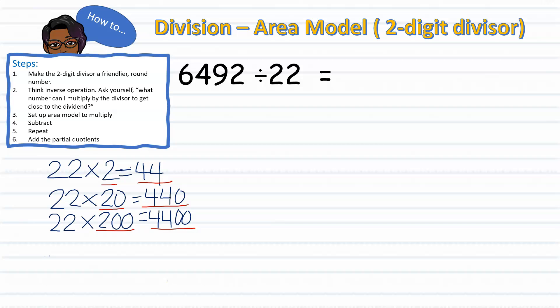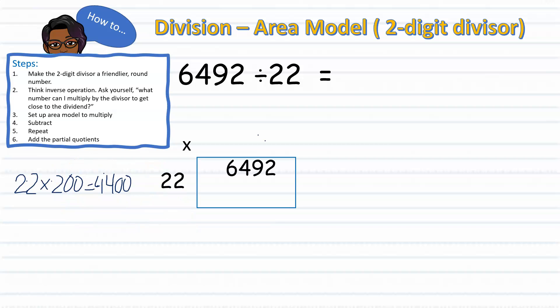Now let's set up our area model. Now that I have set up my area model, I am now ready to multiply 22 times 200, giving us 4,400. Moving right along to step four, we're ready to subtract 6,492 minus 4,400. Leaving a difference of 2,092, which is much larger than our divisor,